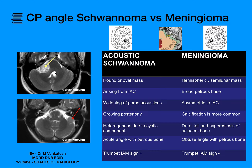Here you can see two examples. It's a straightforward case of acoustic schwannoma. You can see mild widening of the right internal auditory canal and a soft tissue lesion which is heterogeneous signal intensity in the right CP angle. Left CP angle is normal. The lesion is causing compression over the cerebellar peduncle and pons.